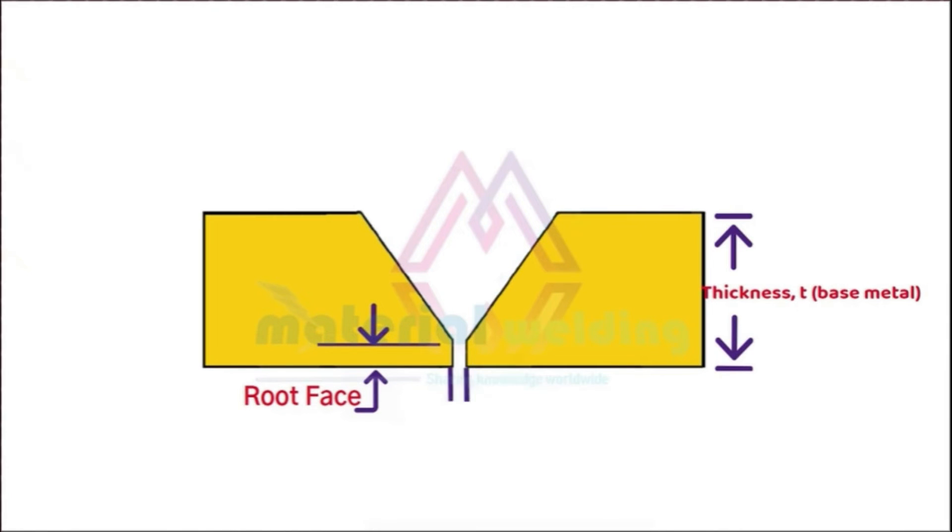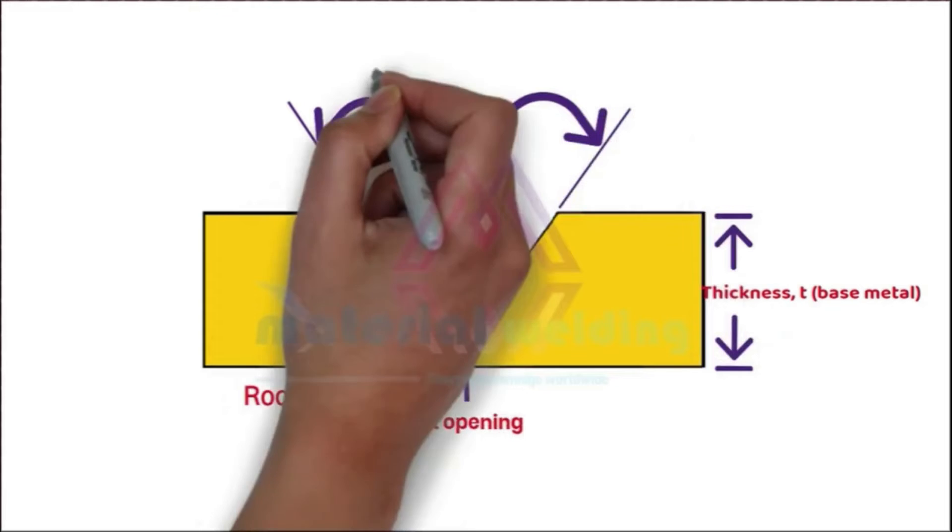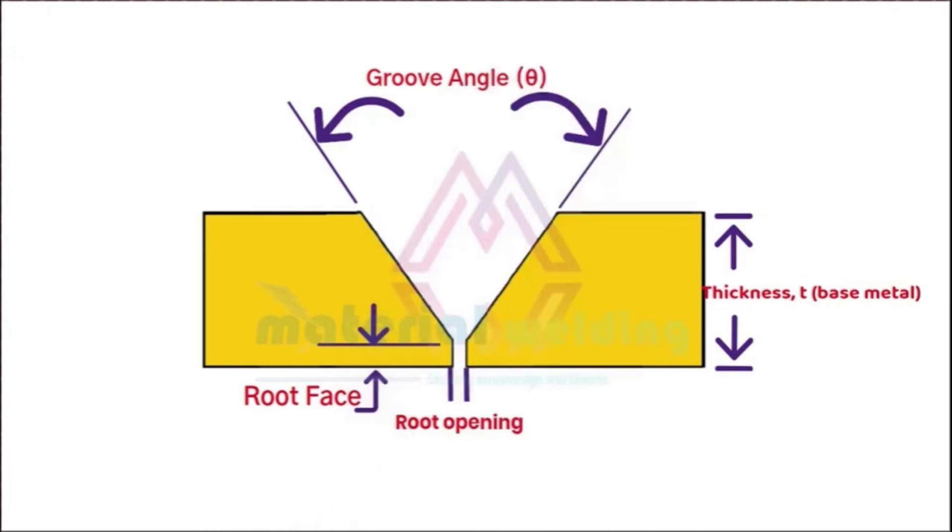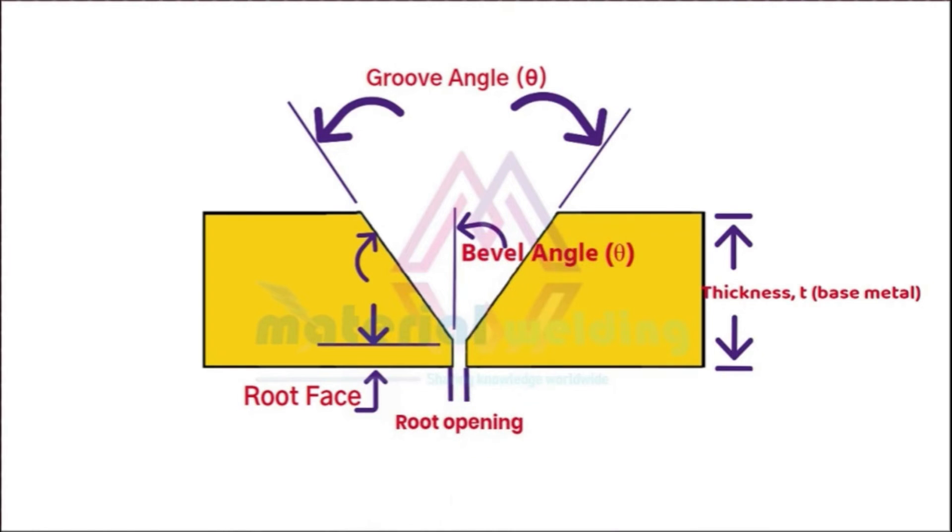The gap between two plates before welding is called the root gap or root opening. When both plates are tack welded, the total angle shown here is called groove angle or included angle. The angle for a single plate is called bevel angle, and the tapered area is called the bevel face on which the weld is deposited.